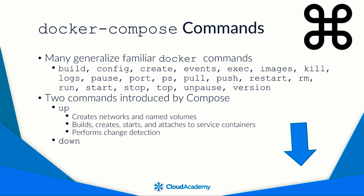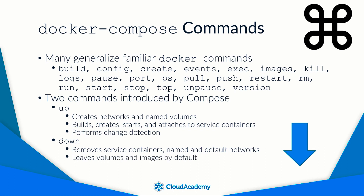The other command unique to Compose is DOWN. DOWN is a partial opposite of UP. It will only remove containers as well as any named and default networks by default. It won't delete volumes or images that UP created, unless you pass arguments instructing it to do so. UP and DOWN make it easy to perform integration tests in a CI pipeline — simply wrap a test script between UP and DOWN to run tests in an isolated environment.